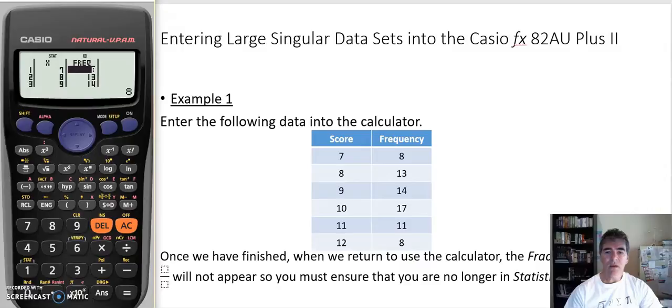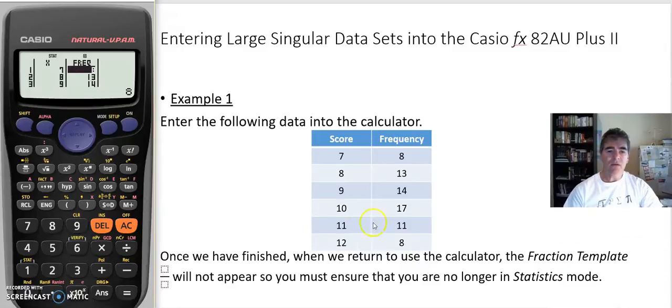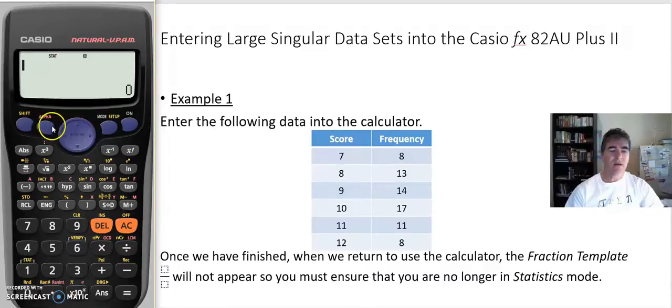What we've got to be careful of though is once we have finished with the data. So if I press all clear, I'm still in statistics mode. If I try and use the fraction template, it's not going to work, just like I showed you in the small data sets. So we now have to get out of that by pressing our mode, go to one, and now our fraction template will work as normal.